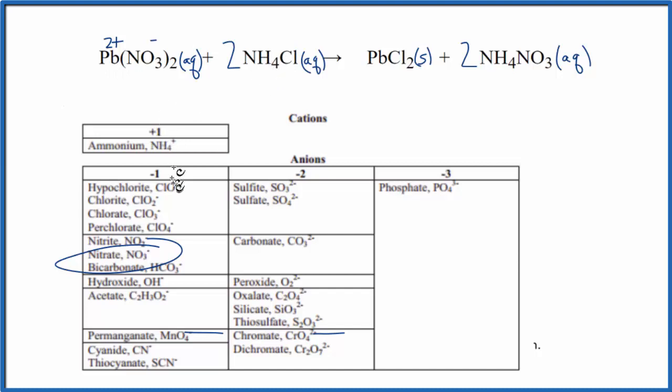For the ammonium, we can find that. That's one of the few positive polyatomic ions. Chlorine's going to have a negative charge. So we have those charges. This is a solid, so we're not going to worry about it. We said ammonium 1 plus, the nitrate 1 minus. So we have our charges.